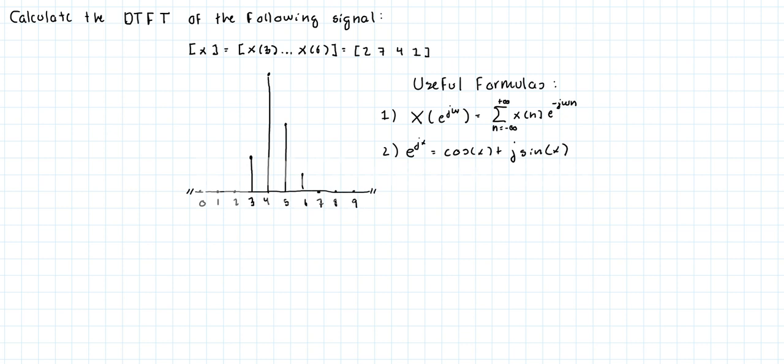The discrete signal that we have goes from x(n) where n equals 3 to x(n) where n equals 6. That means outside this range, from x(2) all the way down to minus infinity and x(7) all the way up to infinity, it's equal to 0, as you can see on the graph over here. The numerical values for x are 2, 7, 4, 1, and 0 everywhere else.